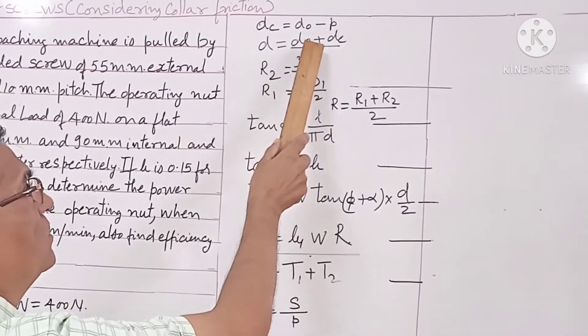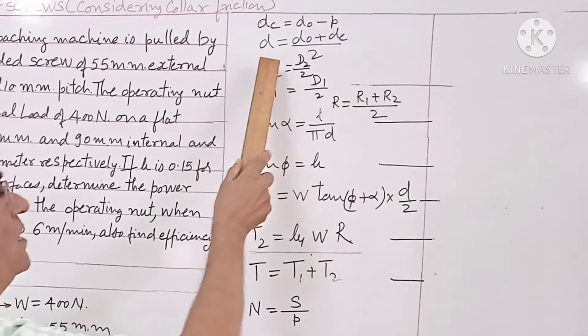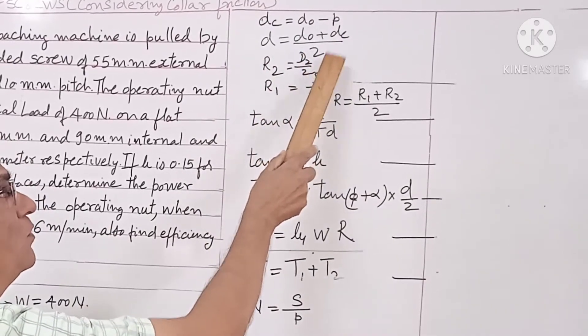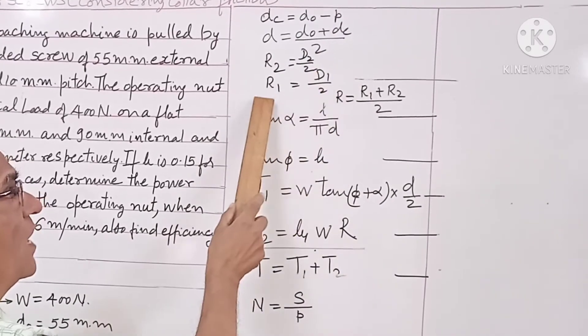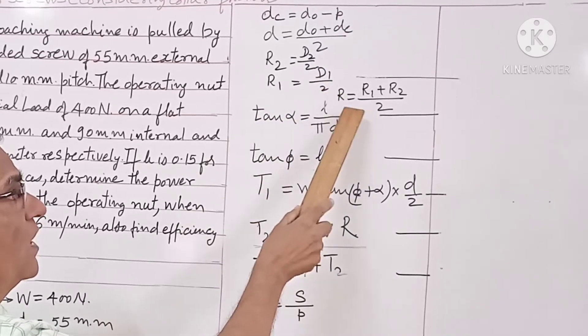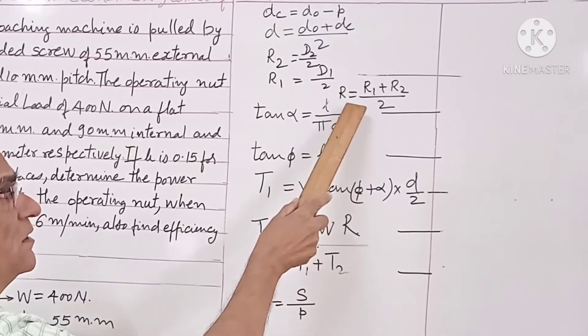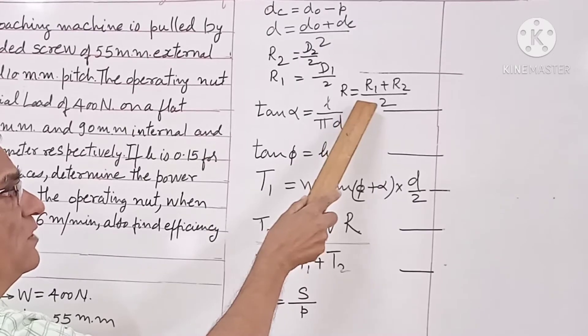We will write down the formulas used. Dc is equal to DO minus pitch. D is equal to DO plus DC by 2. R2 is equal to D2 by 2. R1 is equal to D1 by 2.